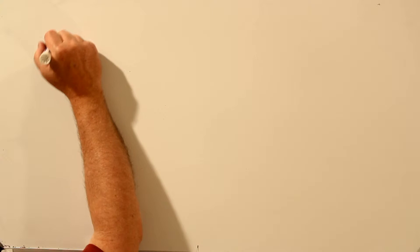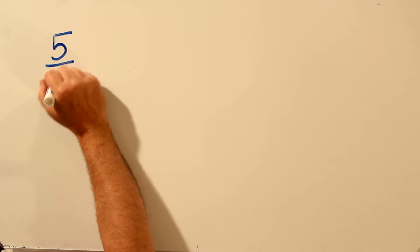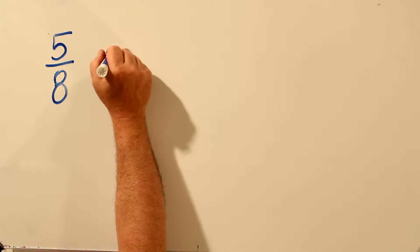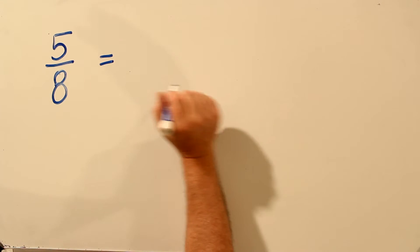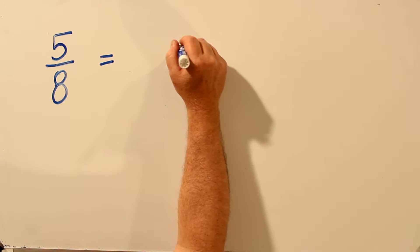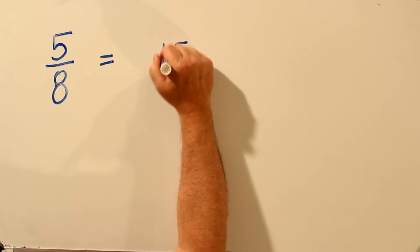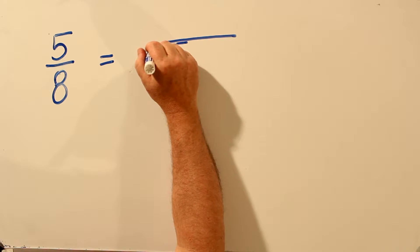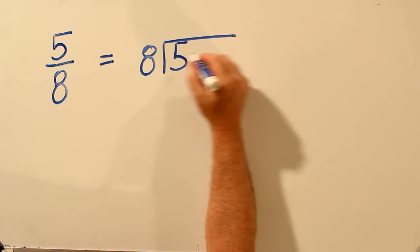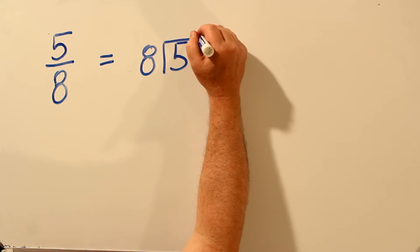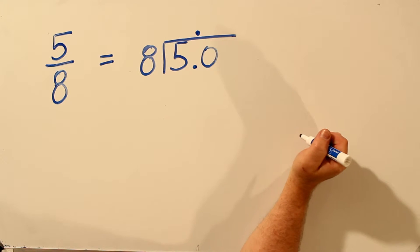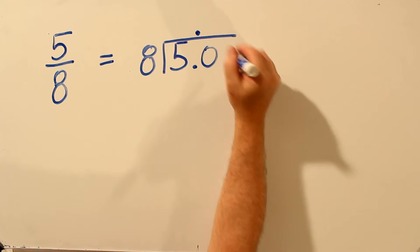Let's try 5 eighths, convert this fraction to a decimal. 5 over 8, or 5 divided by 8, in long division terms, that's 5 divided by 8. 8 does not go into 5, so we'll add a 0. Put our decimal point there. 8 does go into 50, 6 times.